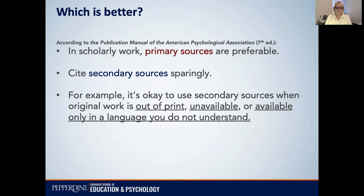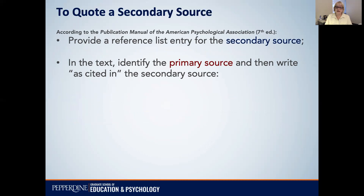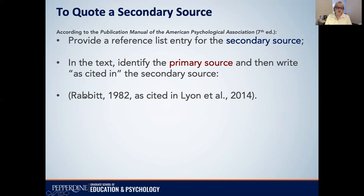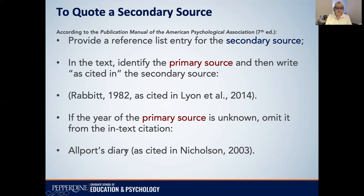To quote a secondary source, you should provide a reference list entry for the secondary source. In the text, identify the primary source and then write "as cited in" the secondary source. For example, the original or primary source here is Rabbit 1982, as cited in Lion 2014. You can see the significance of the dates — here's the earlier one quoted in the later one. If the year of the primary source is unknown, you can just omit it. Here you see we have the original author but no year cited, and then here is the secondary source shown in the in-text citation.